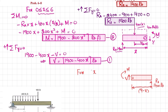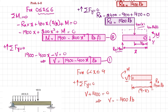For x greater than 6 and less than or equal to 9: applying sum of forces in Y equals zero with upward positive, V + 1400 = 0, so V = −1400 pounds. The negative sign means our assumed upward direction for V was wrong; it should be downward. The shear force is constant at −1400 for this range. This is equation 3.